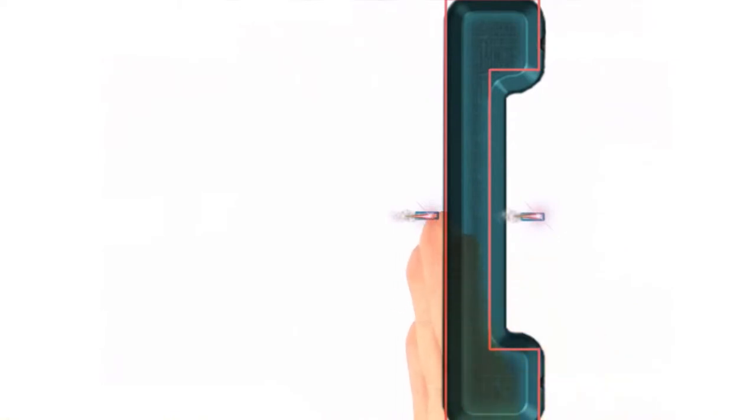Now, everything in our physics engine happens at discrete steps. So there's no point at which this bounding box and this bounding box intersect.